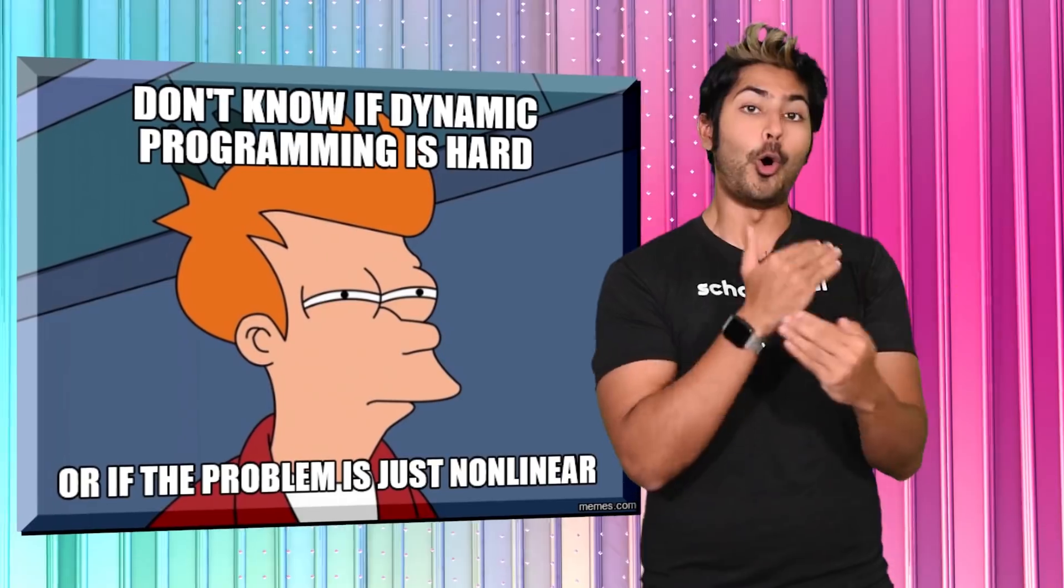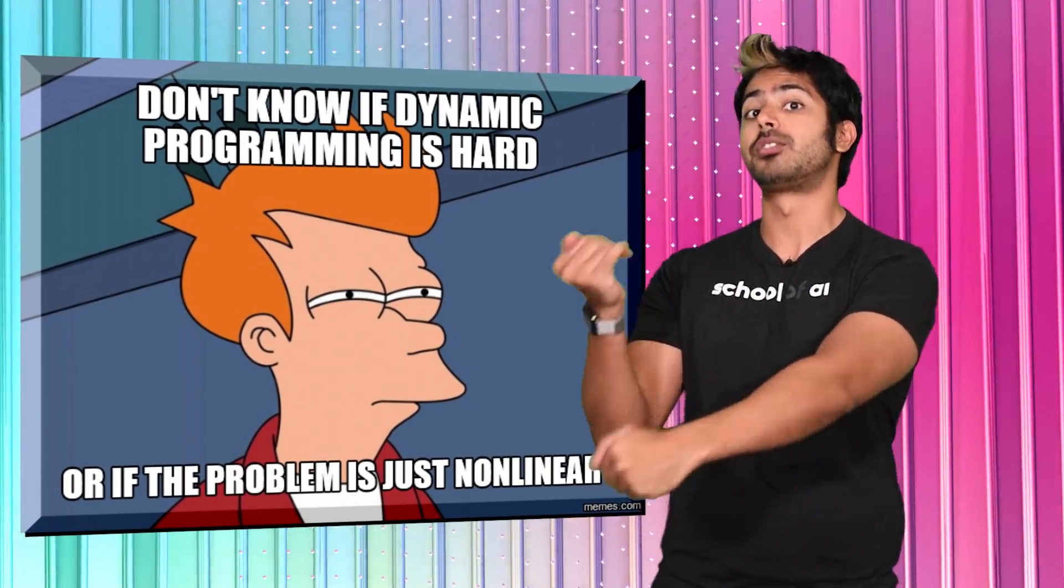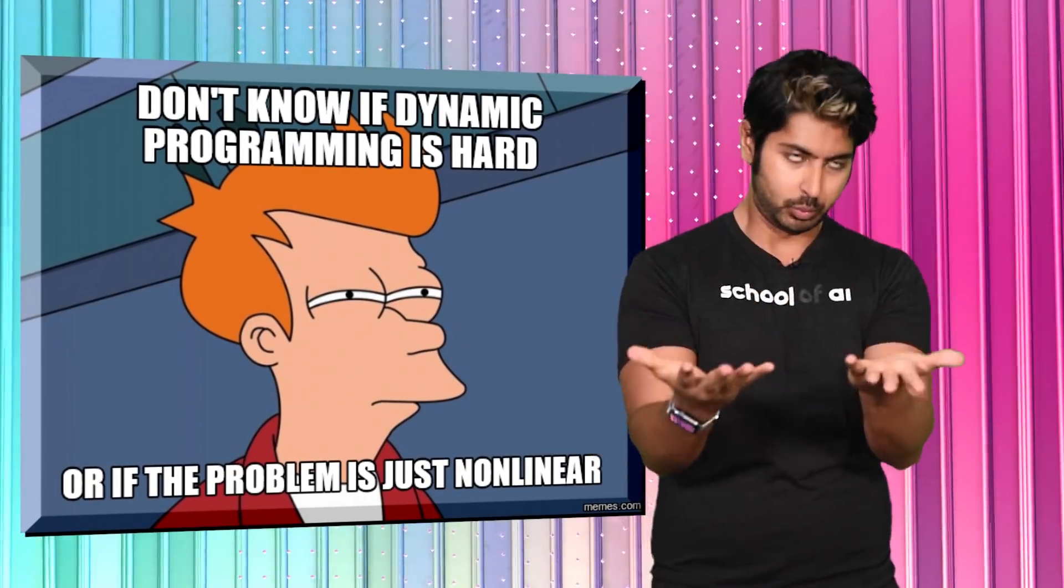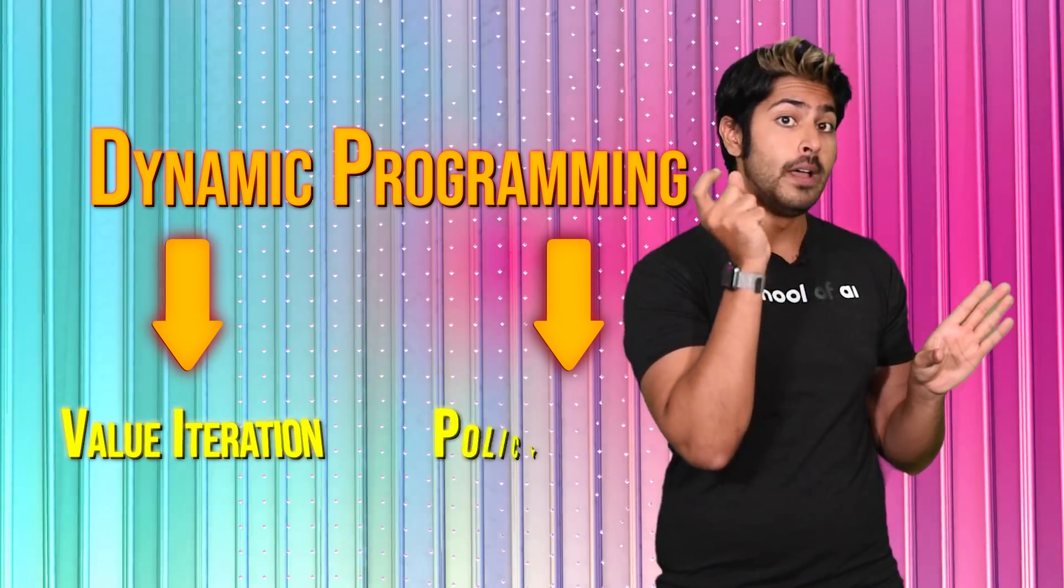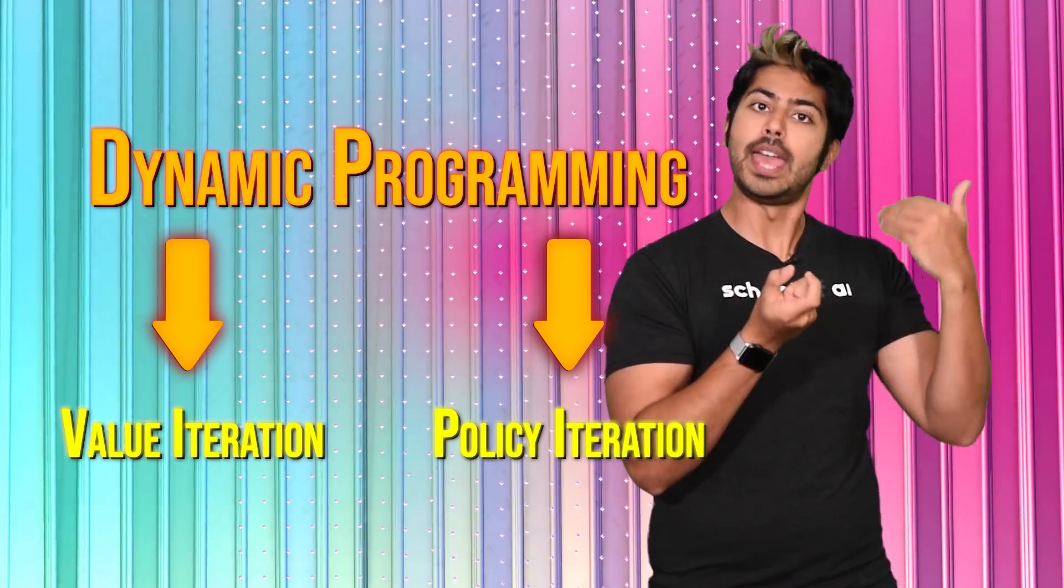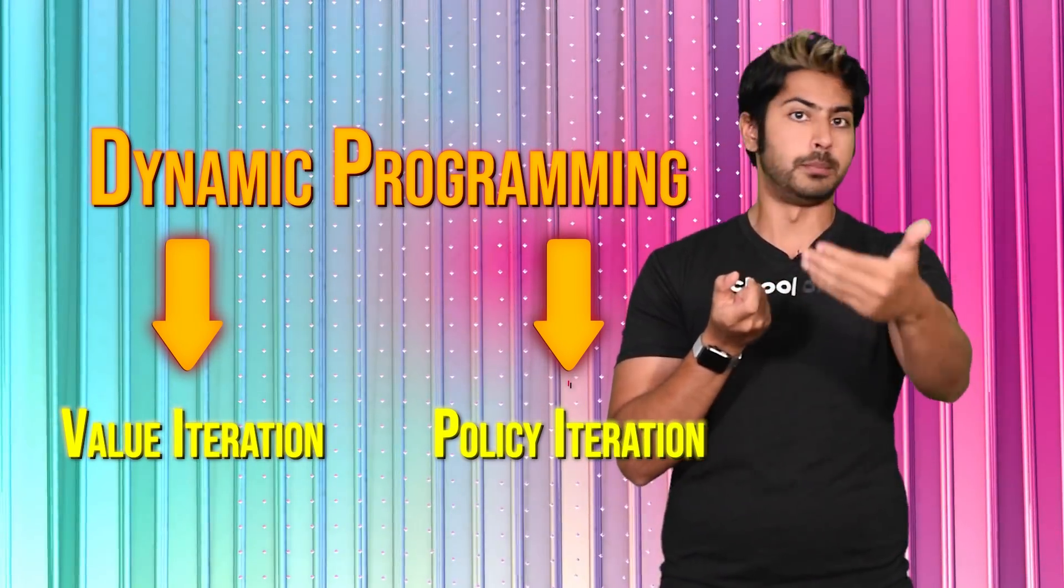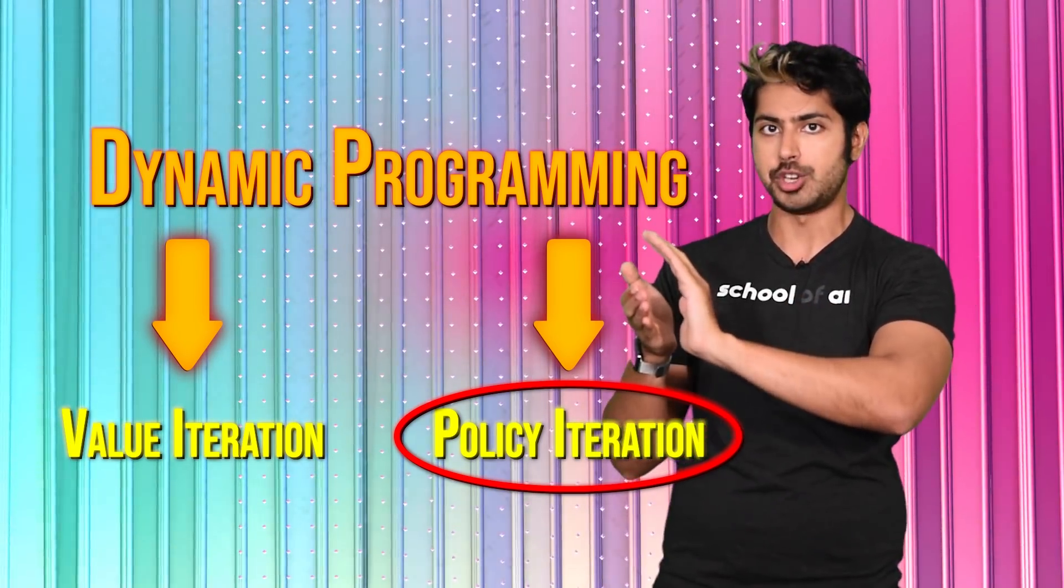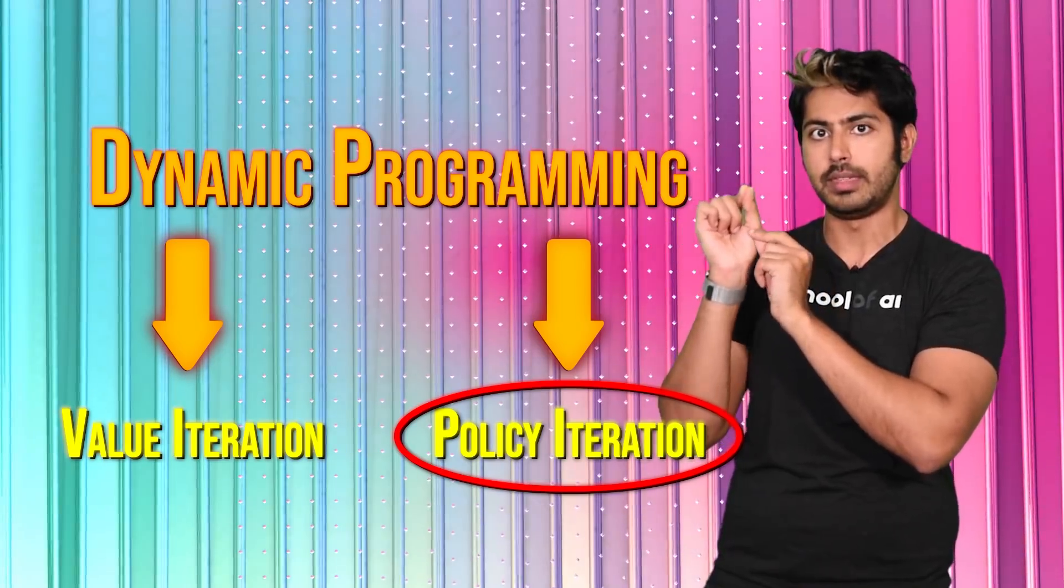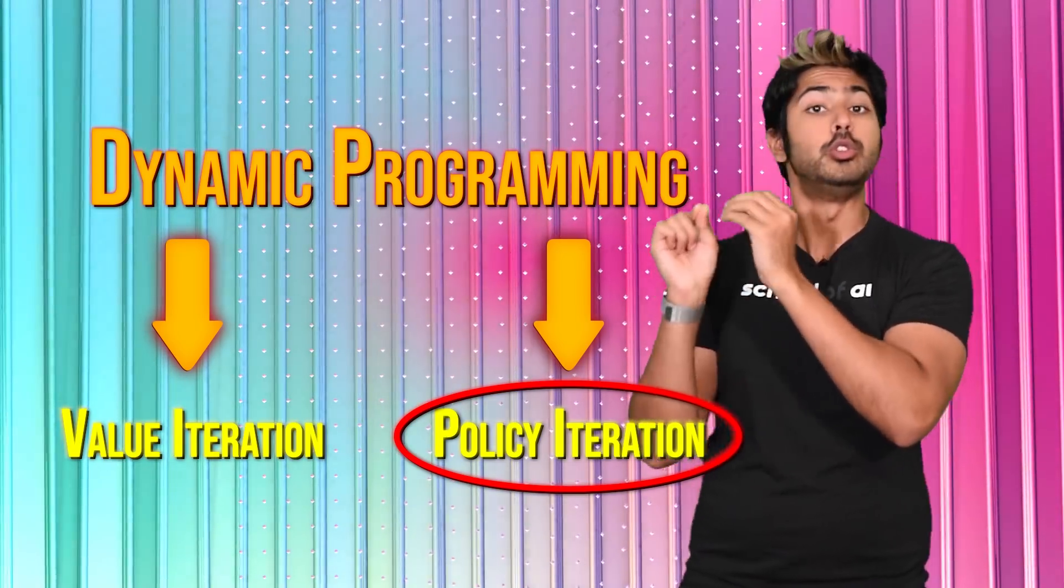So, because we know all the elements of our Markov decision process beforehand, we can use dynamic programming. We've used value iteration to estimate the optimal value function, which we could then use to estimate the optimal policy. But, there's another technique called policy iteration that directly computes that optimal policy. Let's use that one.